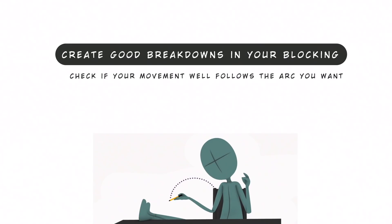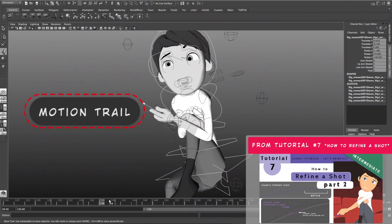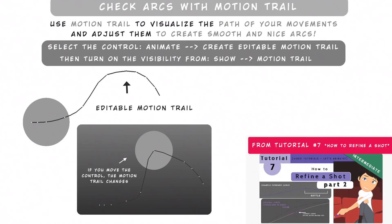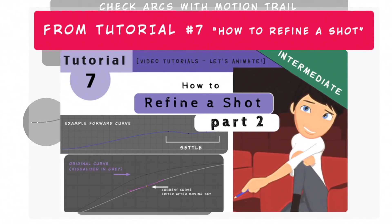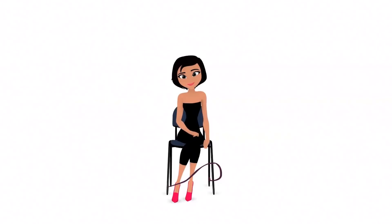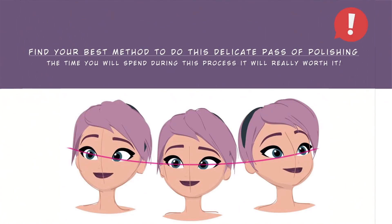You should check if, on each frame, your movement follows the arc you want. In 3D, we have different tools to help us check arcs — from the motion trail visualization tool in Maya, which I explained in tutorial 7 on how to refine a shot. You can also install scripts to show your path, use extra software that allows you to draw on your screen, or manually do it using transparent paper on your screen. Find your best method for this delicate polishing process — the time you spend is really worth it.